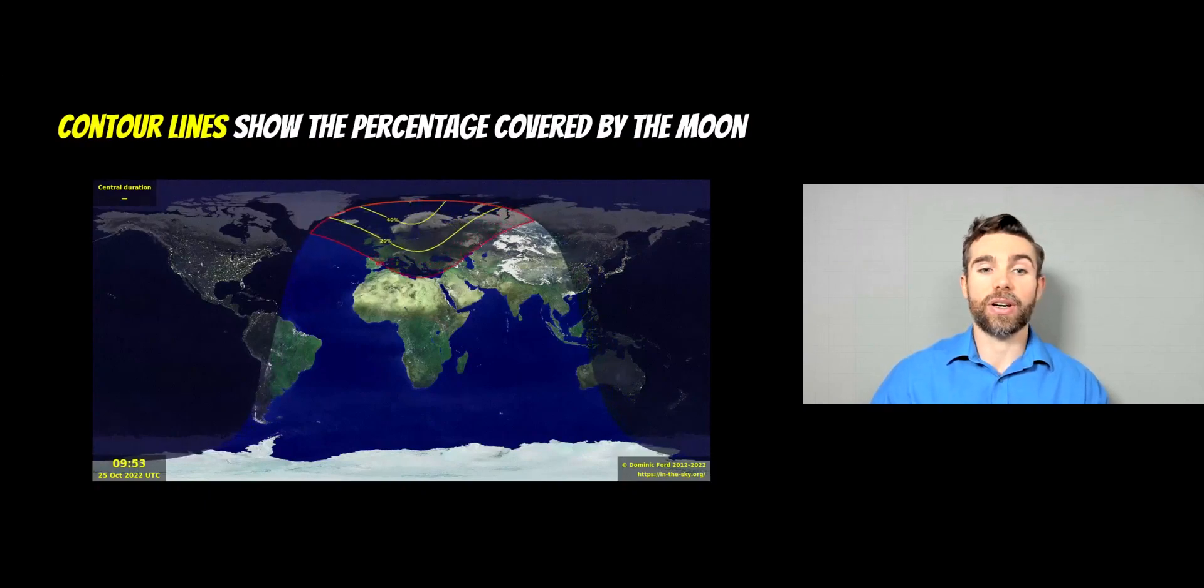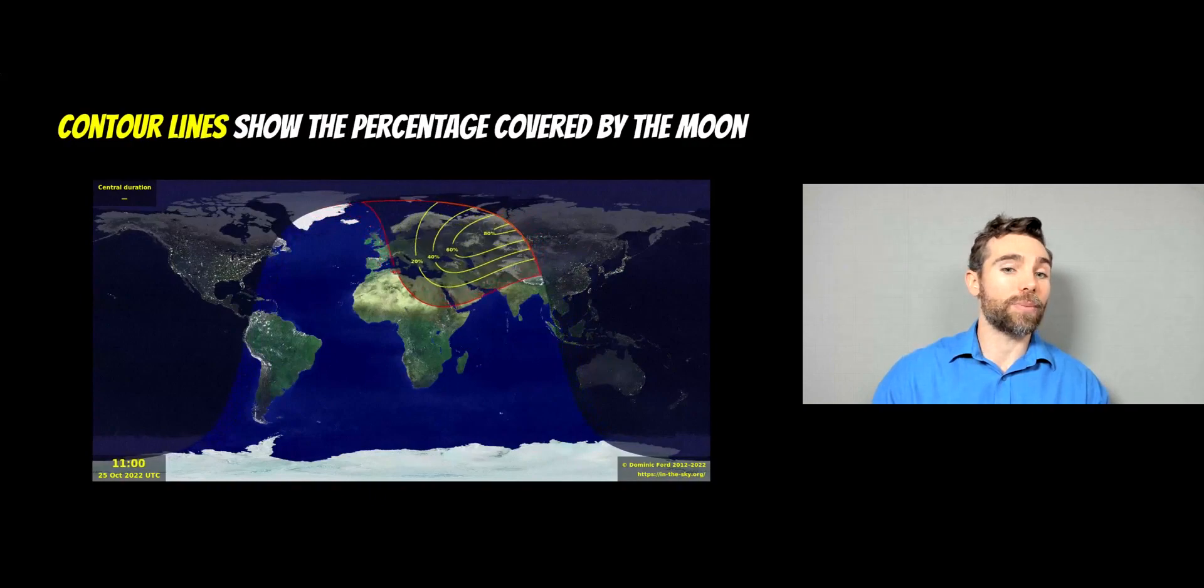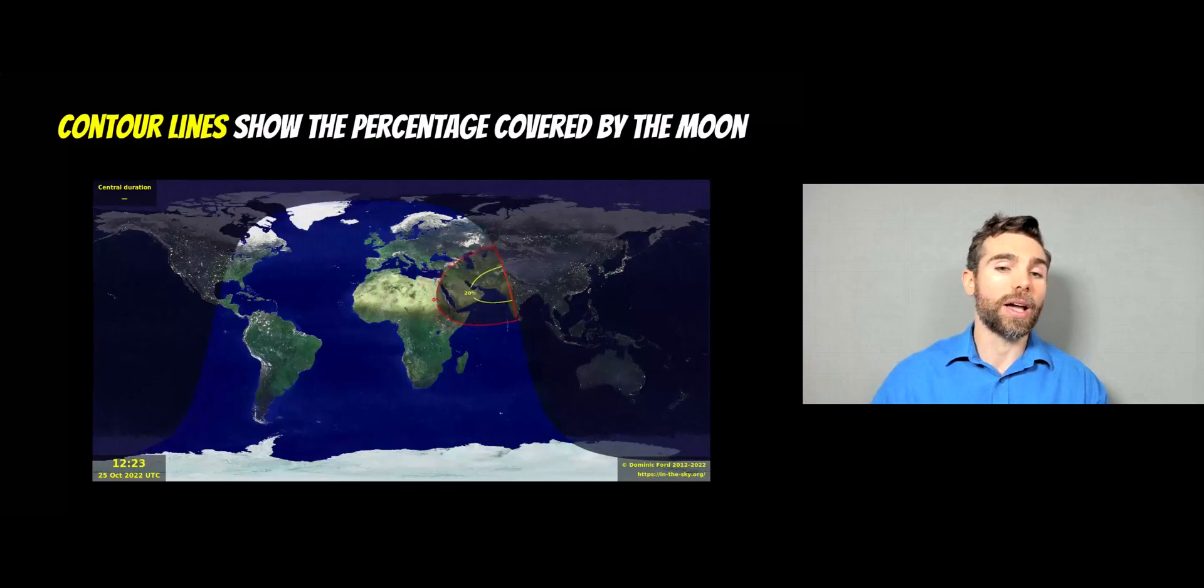You can see that towards the west part of Europe, you're not going to get much of the sun obstructed at all, whereas the best parts are actually going to be further over Asia and over Russia.